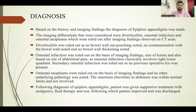The diagnosis was based on history and imaging findings. Imaging differentials considered were diverticulitis, omental infarction, and omental neoplasms. Diverticulitis was ruled out as no bowel wall outpouching, communication, or wall thickening was noted. Omental infarction was ruled out based on lesion size under two centimeters and the location — omental infarction classically involves the right lower quadrant, whereas our patient had left lower quadrant pain. Secondary omental infarction and omental neoplasms were also ruled out as there was no surgical history and the omentum elsewhere was normal.